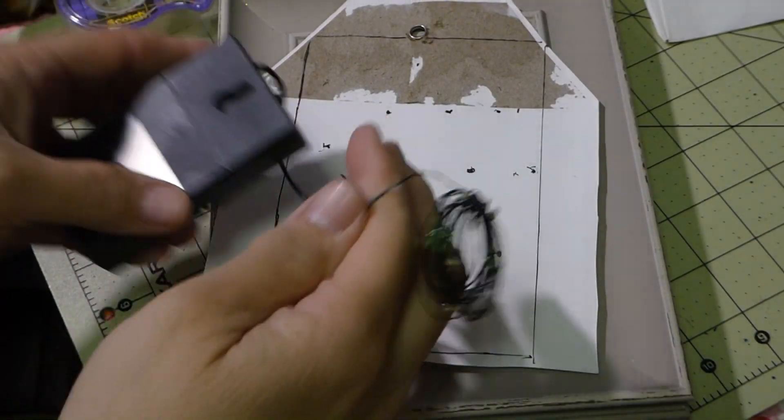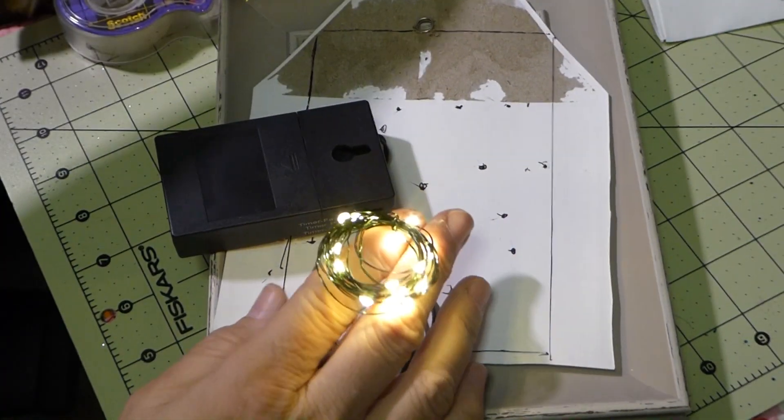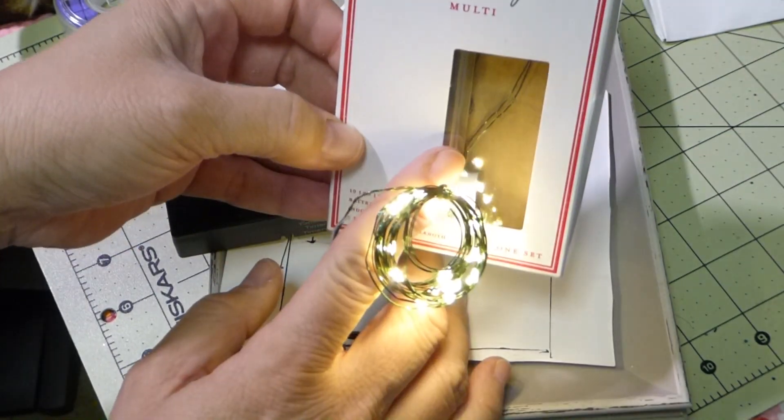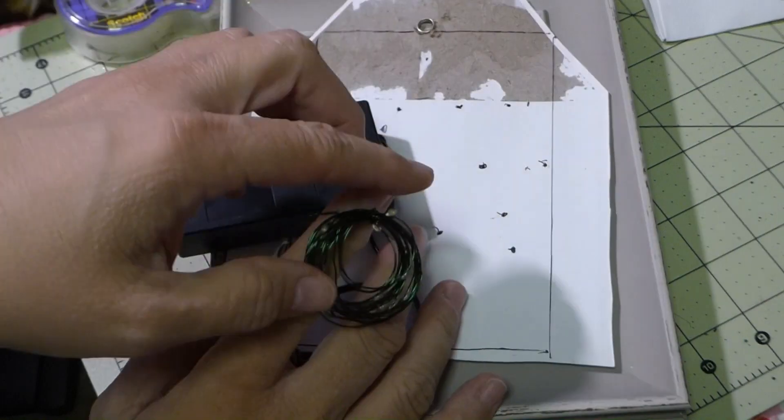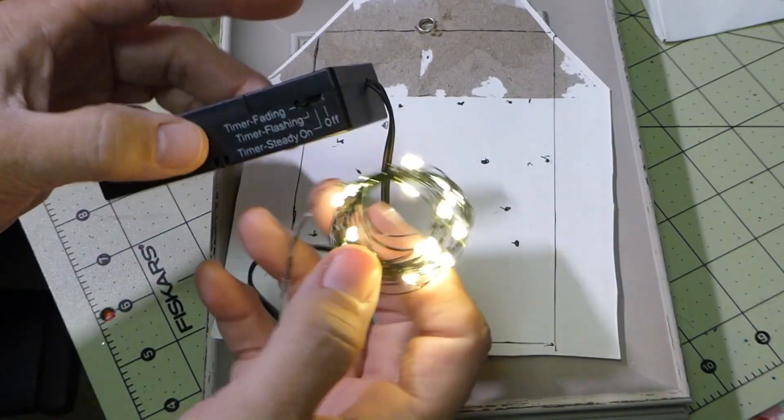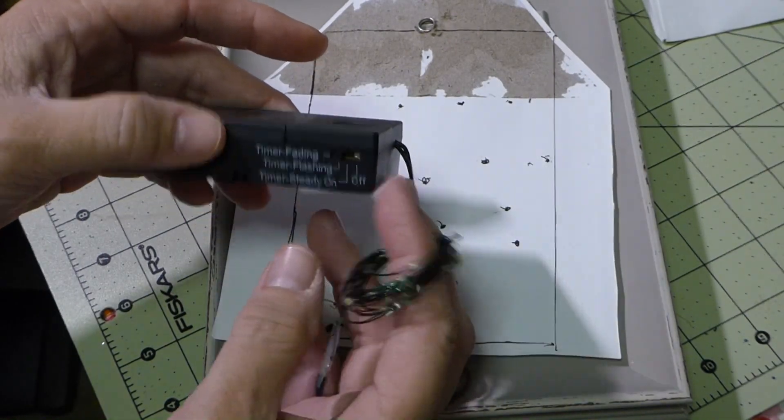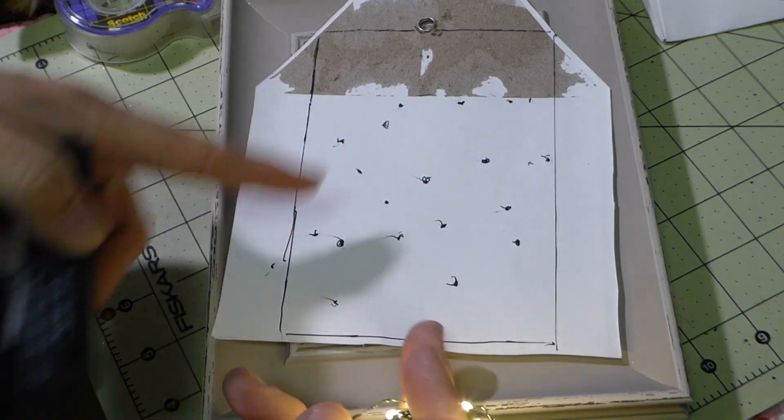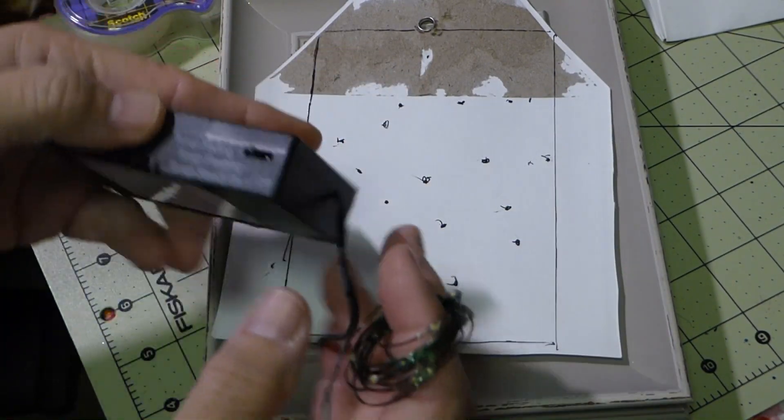The other thing we're going to be using is these little LED lights. This one had 10 and they were colorful, different colors, but this one had 18 and they were all white. I wanted to go with the white better, so I drew 18 places where I could put the lights.